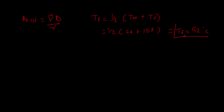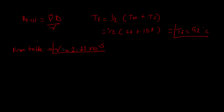Now that we have our film temperature, we go to the air tables. From the tables, we get a kinematic viscosity of 2.22 × 10⁻⁵ m²/s. Note that on the air tables it goes by 10-degree increments, and our temperature was not divisible by 10, so I had to interpolate this value.